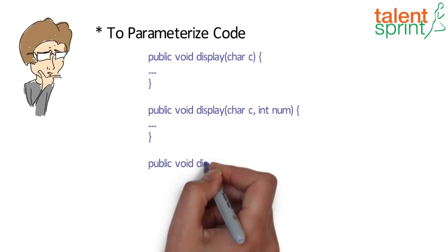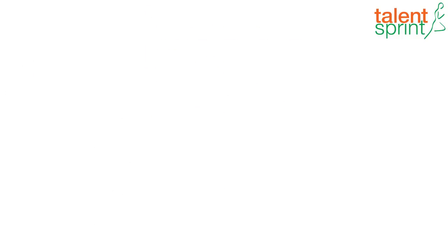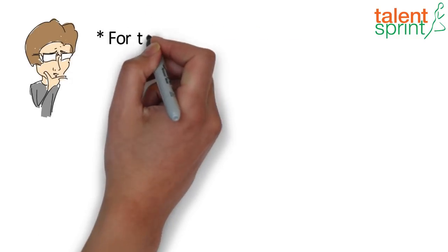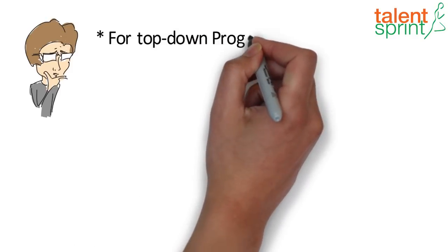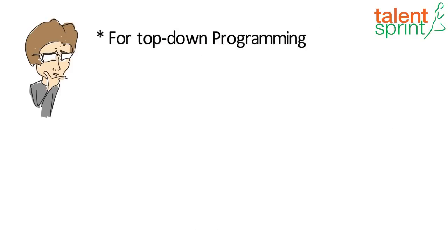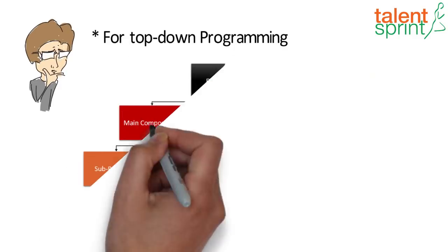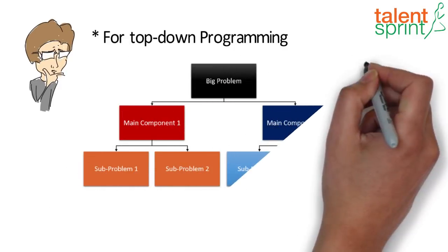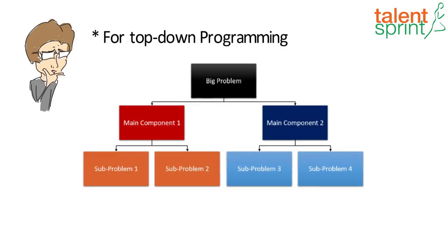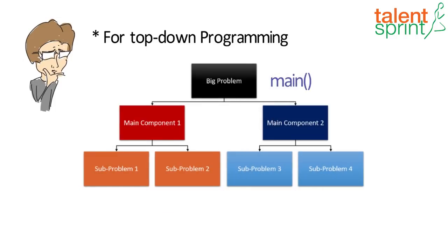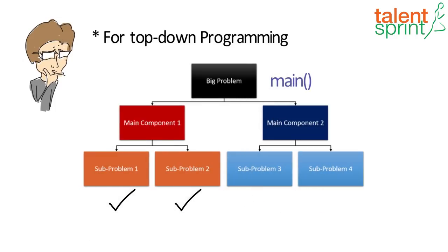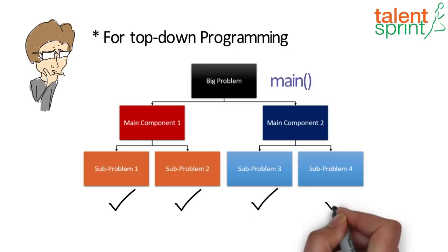The third reason why we use methods is because it helps achieve top-down programming. Now this is a very useful style of programming. You solve a big problem by breaking it down into smaller ones. So you write a method that is main to solve the bigger problem by calling smaller methods into your main method.